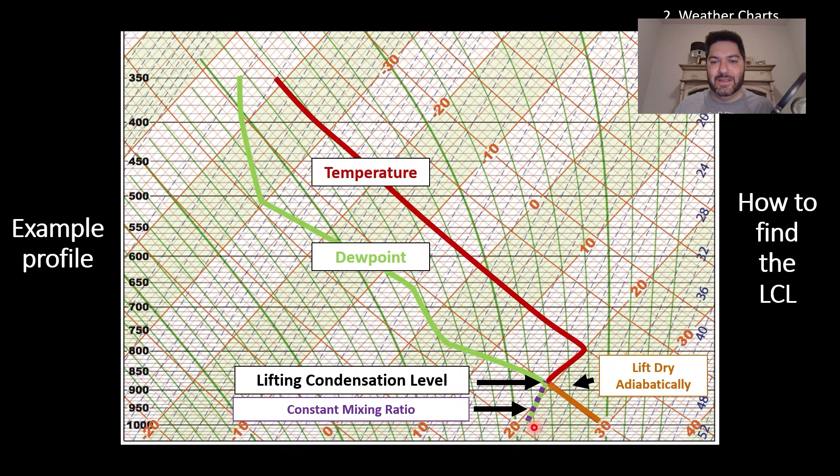I just want you to know that in this case, you may actually see a profile that doesn't follow that dry adiabat nicely, but you still want to lift dry adiabatically. And the same for the dewpoint temperature. It doesn't always follow a nice constant mixing ratio, but you do want to follow a constant mixing ratio line when you do find the LCL. By the way, if you do have this situation where you have a temperature profile following the dry adiabat and the dewpoint temperature following a mixing ratio line, that's known as well mixed.